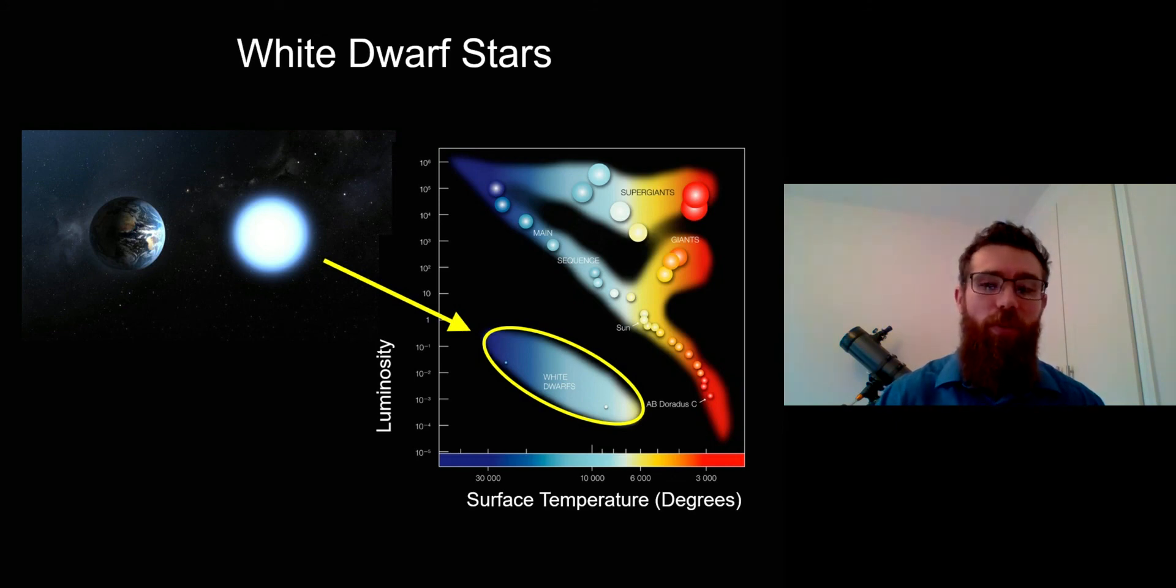Over time, they move down in that white dwarf group to the lower right, and they cool down. In time, they won't be visible at all—it'll take a very long time.